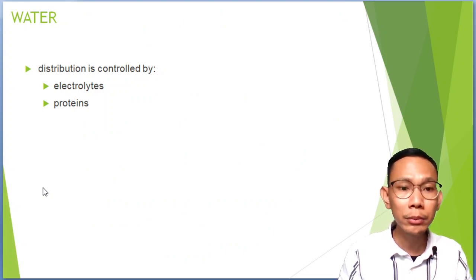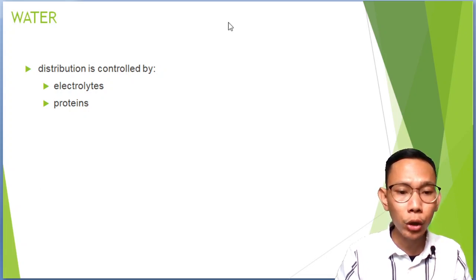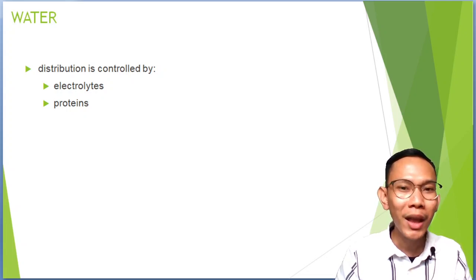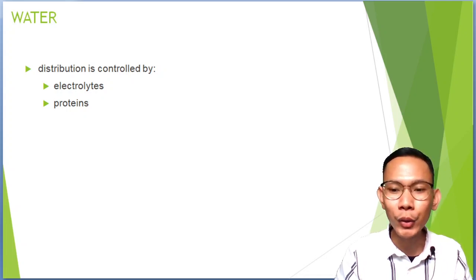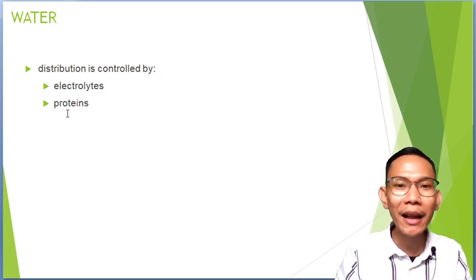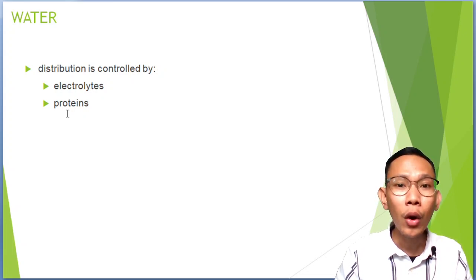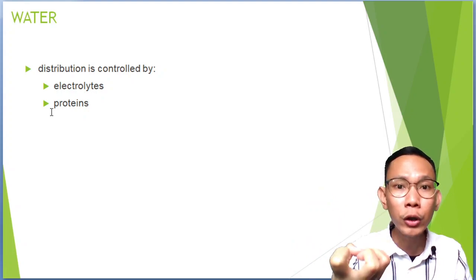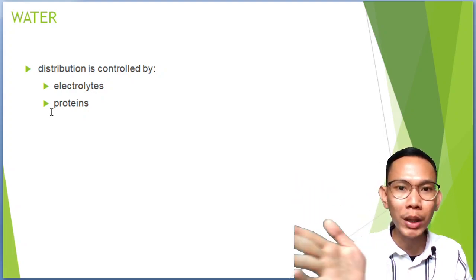Water distribution is controlled by electrolytes and protein. Because most biologic membranes are freely permeable to water but not to ions or proteins, the concentration of ions and proteins on either side of your membrane will influence the flow of water across a membrane — an osmoregulator. Remember the osmotic effect of sodium: where sodium goes, water follows. Not only sodium but also your albumin. That is why patients develop edema when serum albumin is low — water escapes from blood vessels into the interstitial fluid because protein, acting as an osmoregulator, is absent.